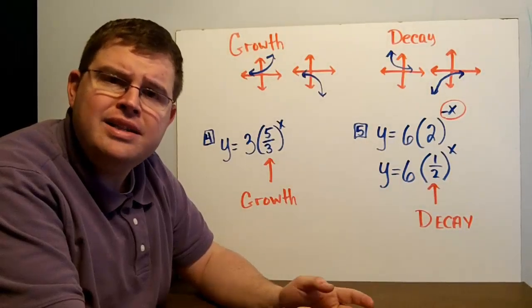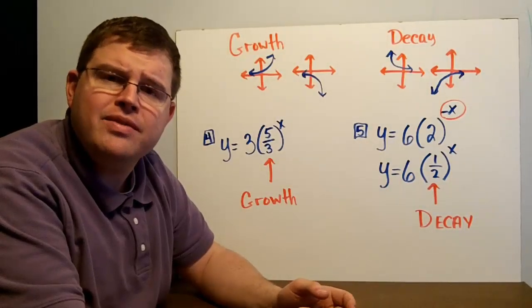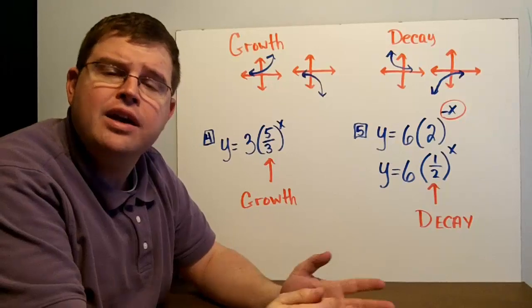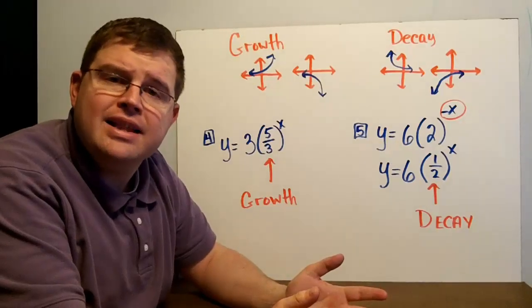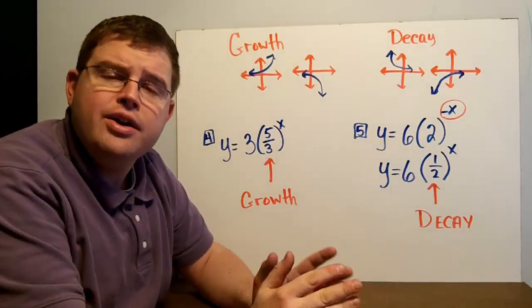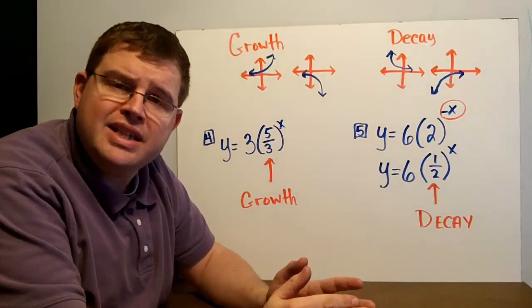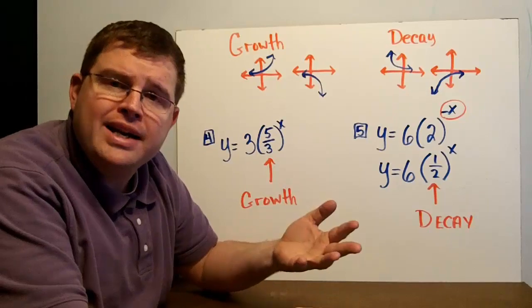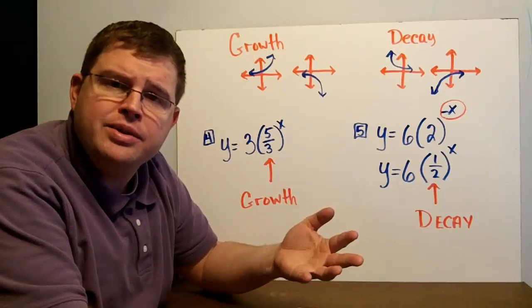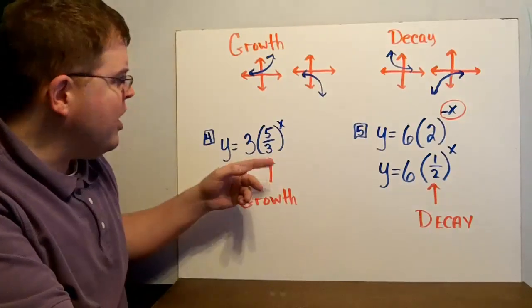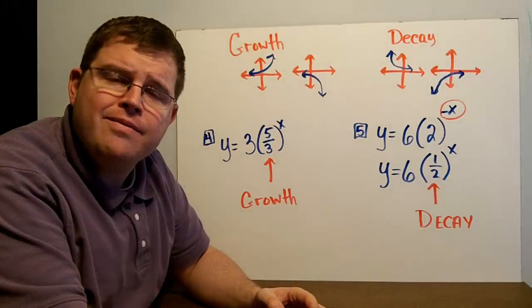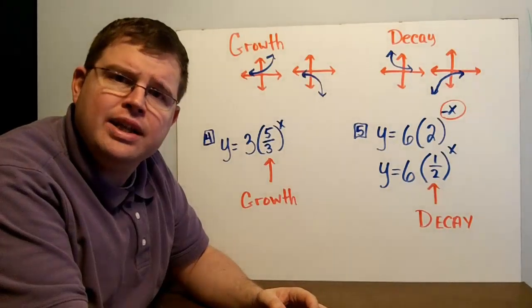Now let's take a look at a couple of examples involving the graphs. Graphing is not that hard — you're simply doing the same thing we've always done. We'll create a table of values, draw in the asymptote, and then construct the graph.